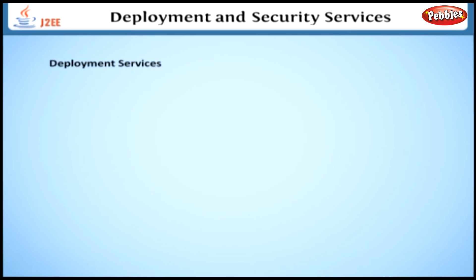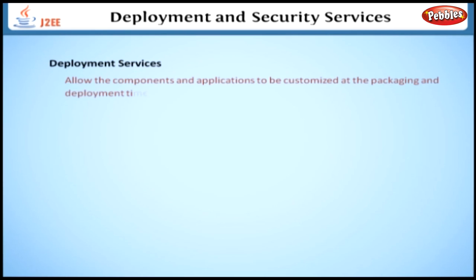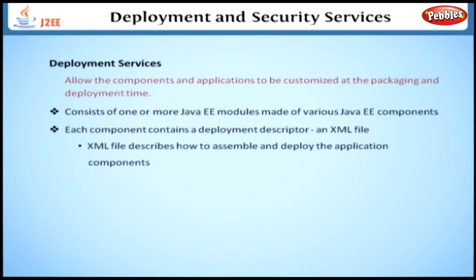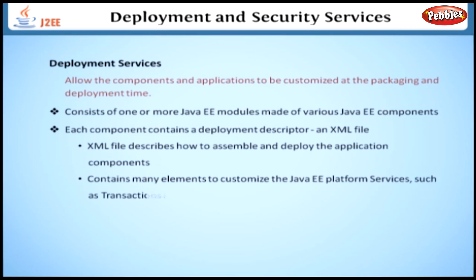Deployment services in Java EE allow the components and applications to be customized at the packaging and deployment time. A Java EE application consists of one or more Java EE modules which are made of various Java EE components, and each component contains a deployment descriptor which is an XML file. This XML file describes how to assemble and deploy the application components. Deployment descriptors also contain many elements to customize the Java EE platform services, such as transactions and security.